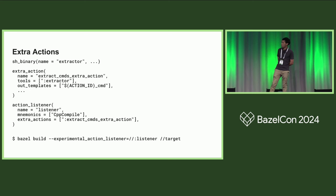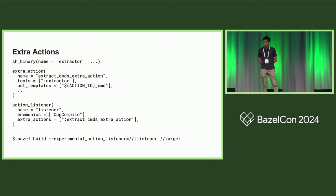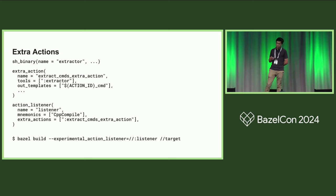The second approach is using extra actions. The idea is that you insert an extra action into the build graph and use that extra action to generate the compile command for each compilation action, and finally merge them into a compilation database. You need to declare an extra action target that tells Bazel how to generate a compile command, then declare an action listener to insert your extra action into every C++ compile action in the build graph. You can then generate a compilation database by building your target with the experimental action listener flag.